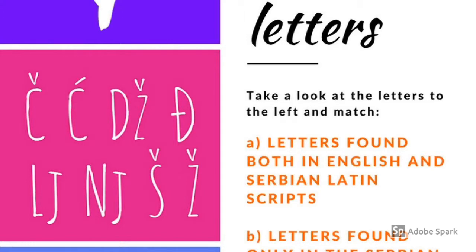The first letter is like 'chocolate', 'Charlie Chaplin', 'Charles' — the tip of the tongue goes near your teeth. The next letter is soft, like 'ćevap', and the middle of your tongue presses up.